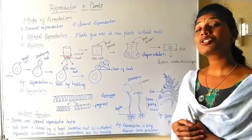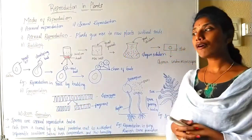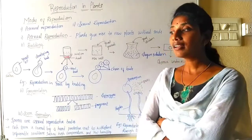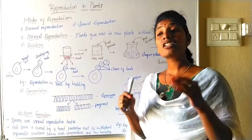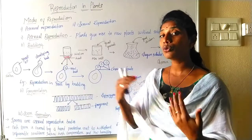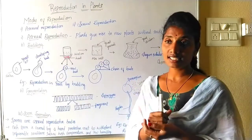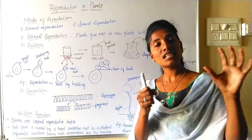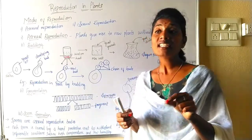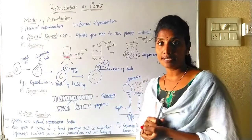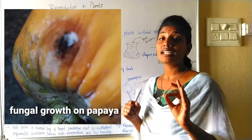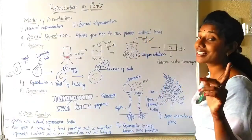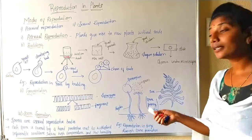There is one more method of asexual reproduction, called spore formation. To understand that, we need to do one more small activity. You might have taken a bread from a bakery. If you keep that bread in its cover for a longer duration, say for example for a week — especially in winter, when you have a cold and humid environment — when you open it after a week, you can see a cotton-type growth over the bread. This growth is called a fungus. This fungus grown on bread is called bread mold, and bread mold is called Rhizopus.